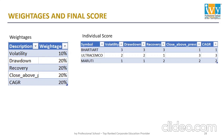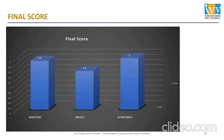I have given weightages to each of the five parameters: Volatility — 10%, Drawdown — 20%, Recovery Days — 20%, Close Above Previous Day's Close — 20%, and CAGR — 20%. Individual scores are assigned based on each company's ranking per parameter. For example, Bharti Airtel was the least volatile and scored 3, got 3 in drawdown, 3 in recovery, but 1 in close above previous days close and 1 in CAGR since it ranked third in those. Similar scoring was done for all other companies.